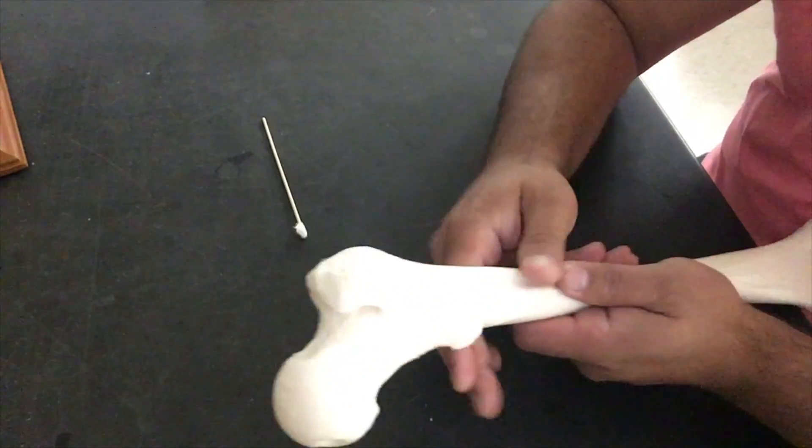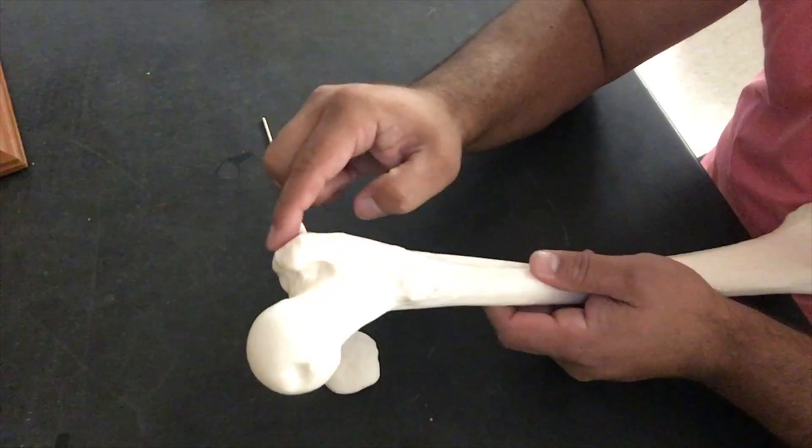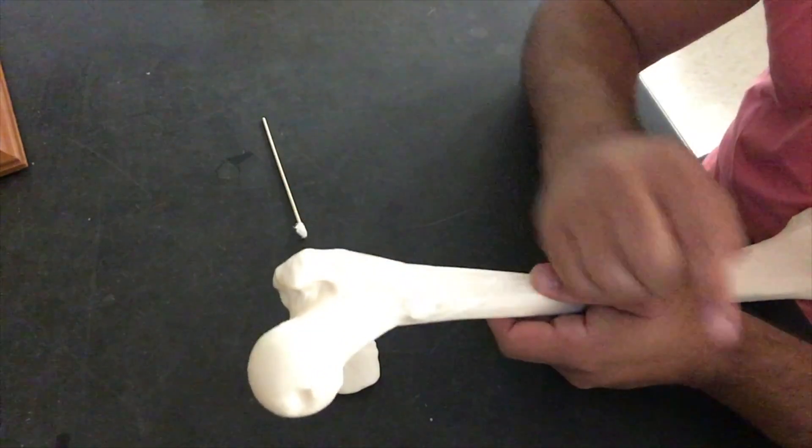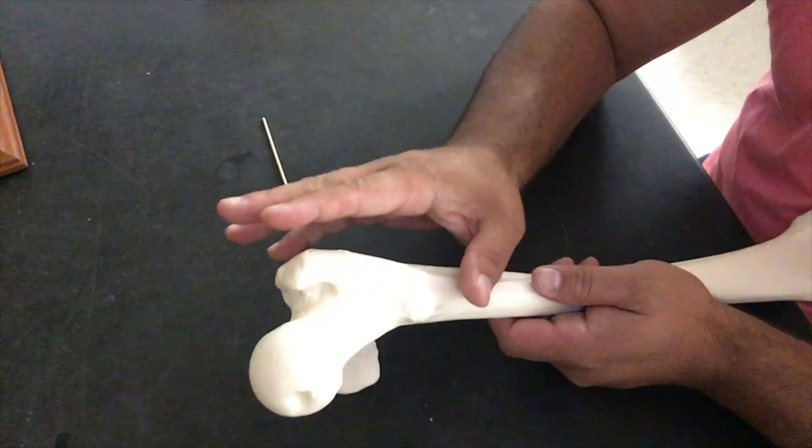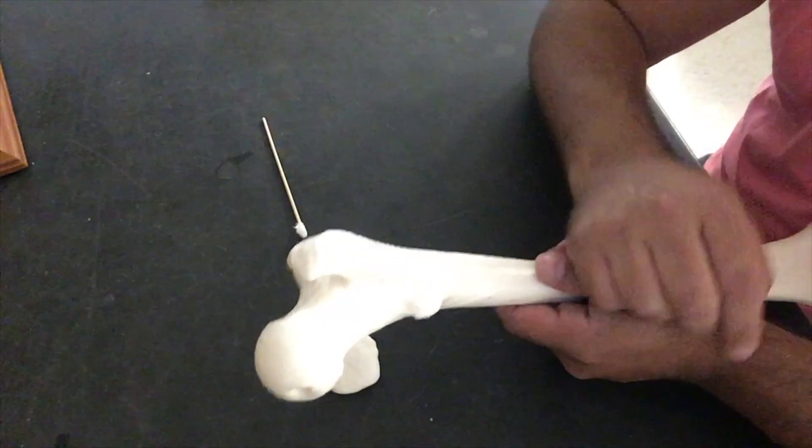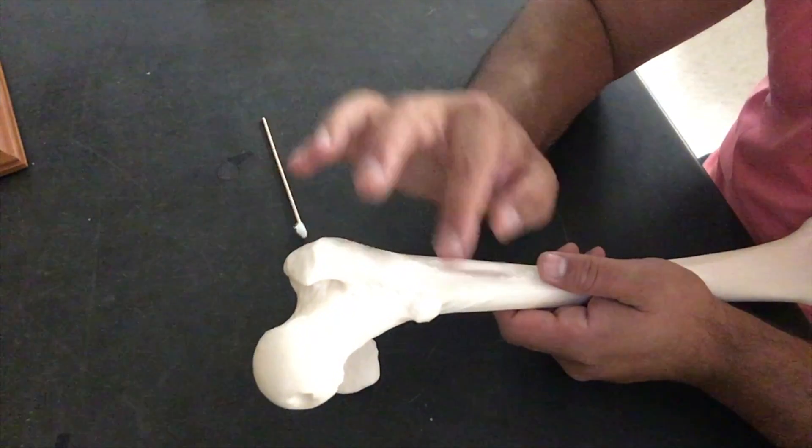Now right below the neck we have these bumps. If you think back to the humerus, we call them tubercles. Well, this is a femur, it's the biggest bone. These are much larger and they're going to serve as point of attachments for tendons, ligaments, and muscles. And they have special names.